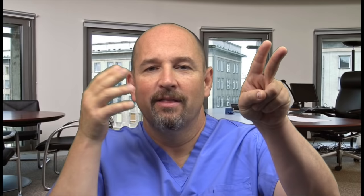For pulmonary embolism, know the PERC rules — pulmonary embolism rule-out criteria. The dance: V, V, bam, bam, leg — five things. V is vital signs (tachycardia and hypoxia) and Virchow's triad (are they clotty — stasis, hypercoagulable state). Bam bam is hemoptysis — spitting blood is sinister. Age range — if greater than 50, you can't use PERC. And leg signs — signs of deep venous thrombosis suggests PE. Treatment is anticoagulation or an inferior vena cava filter.